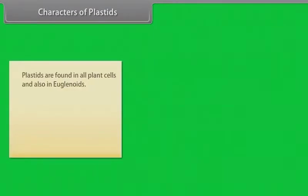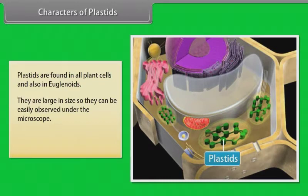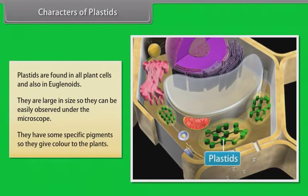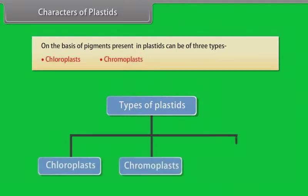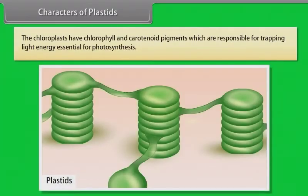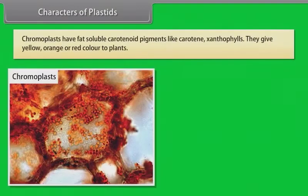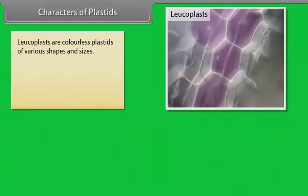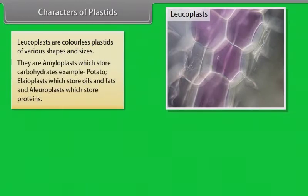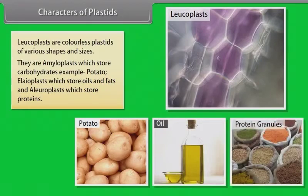Characters of plastids: Plastids are found in all plant cells and also in euglenoids. They are large in size so they can be easily observed under the microscope and have specific pigments that give color to plants. On the basis of pigments present, plastids can be of three types: chloroplasts, chromoplasts and leukoplasts. Chloroplasts have chlorophyll and carotenoid pigments responsible for trapping light energy essential for photosynthesis. Chromoplasts have fat-soluble carotenoid pigments like carotene and xanthophylls, giving yellow, orange or red color to plants. Leukoplasts are colorless plastids of various shapes and sizes; they include amyloplasts which store carbohydrates (e.g., potato), elaioplasts which store oils and fats, and aleuroplasts which store proteins.